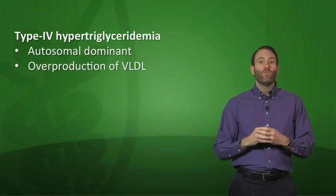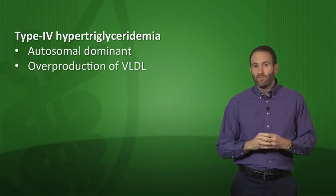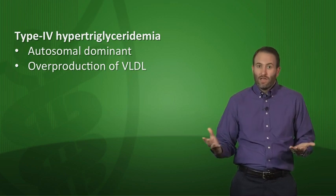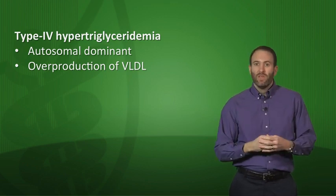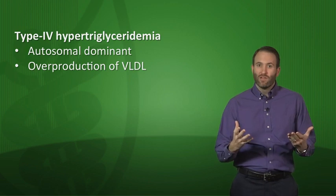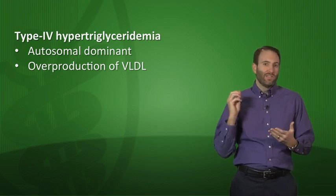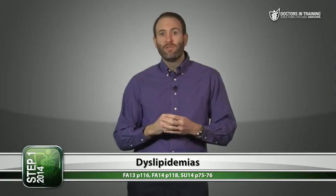The third dyslipidemia is Type 4 hypertriglyceridemia, an autosomal dominant condition that causes overproduction of VLDL in the liver. You'll see increased levels of VLDL and triglycerides, and again, increased triglycerides raise the risk of pancreatitis.